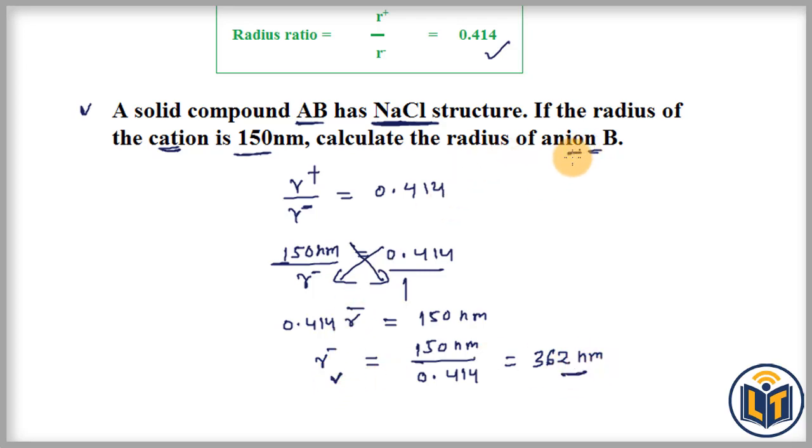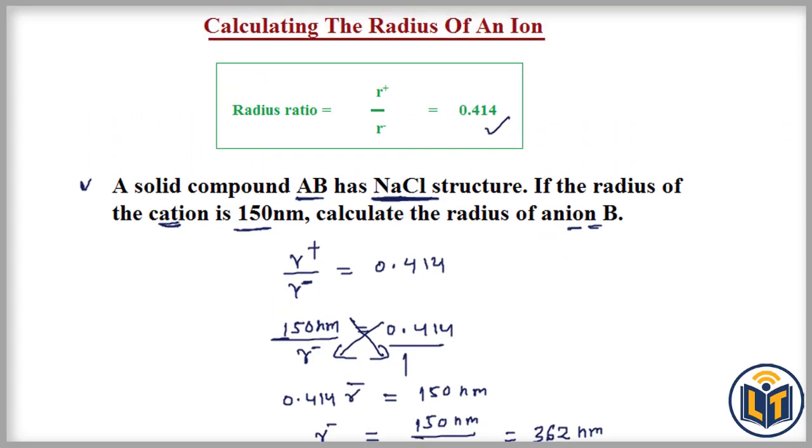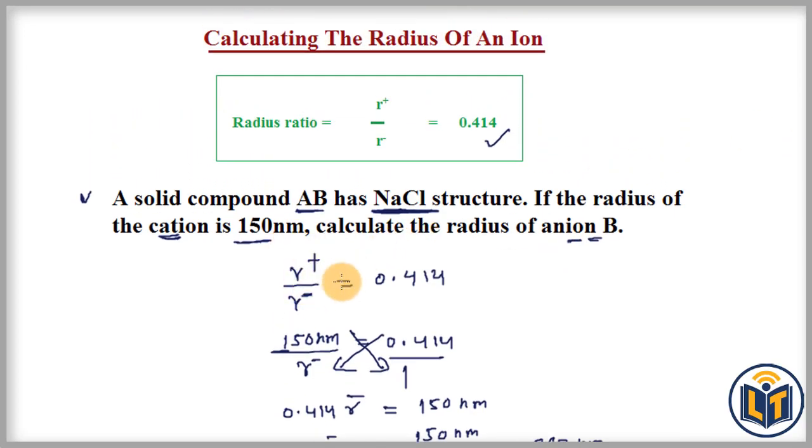You can see how I selected the radius ratio formula to calculate the radius of an ion. First we need to look at the type of structure a compound has, then we find out the structural arrangement.